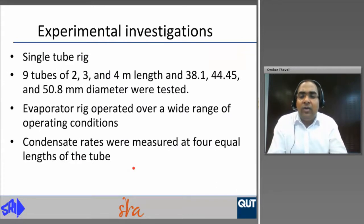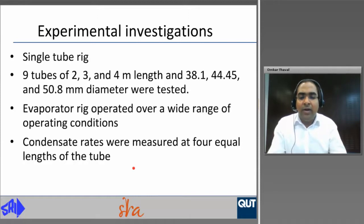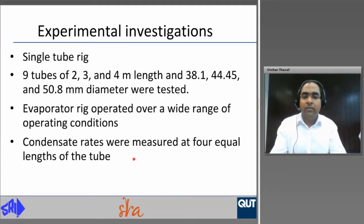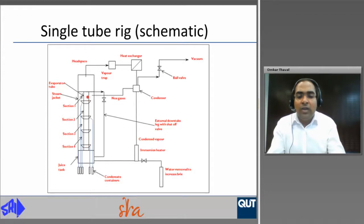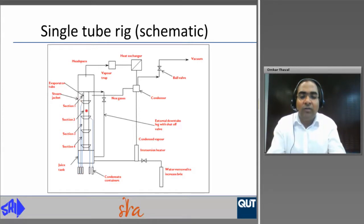The experimental investigation was undertaken for a single tube evaporator rig. Nine tubes of 2, 3, and 4 meter length and 38.1, 44.45, and 50.8 millimeter diameter were tested over a wide range of operating conditions typically encountered in factory vessels. Condensate rates were measured at four equal lengths of the tube. The figure shows a schematic diagram of the single tube rig, where the evaporator tube is encased in a steam jacket and four gutters are placed equidistant along the tube length to collect condensate from each section into containers placed at the bottom.